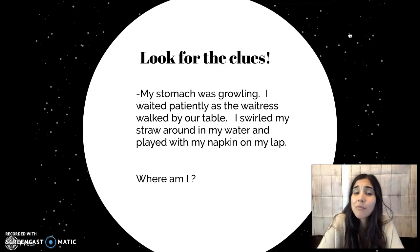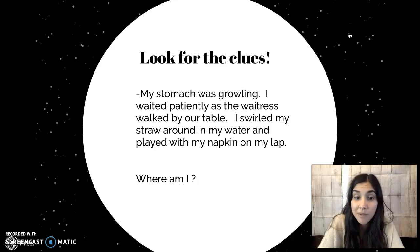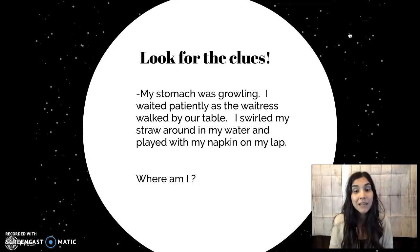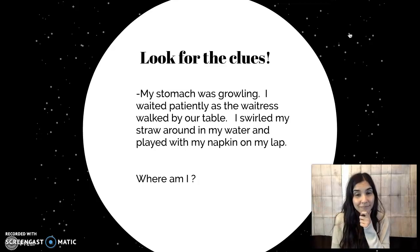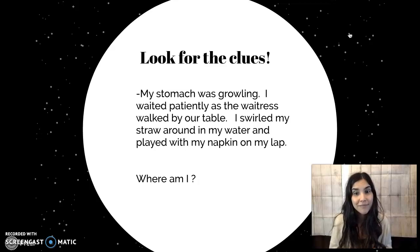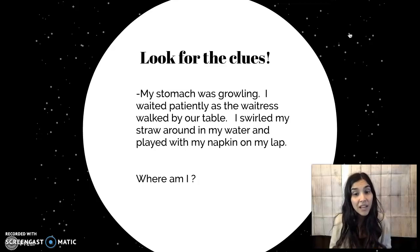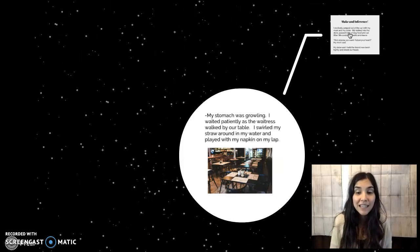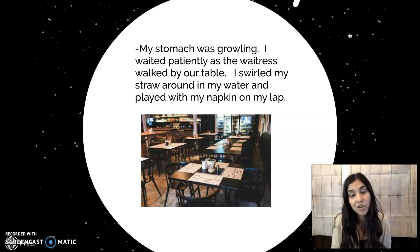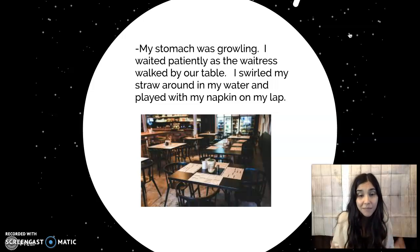My stomach was growling. I waited patiently as the waitress walked by our table. I swirled my straw around in my water and played with the napkin on my lap. Where am I? Your stomach is growling — that means you're hungry. If there's a waitress there, that normally means somewhere you would go out to eat. If you have a glass with a straw in it and a napkin on your lap, I think that this person is most likely at a restaurant. We have a picture of a restaurant here with our text. So that's making inferences.